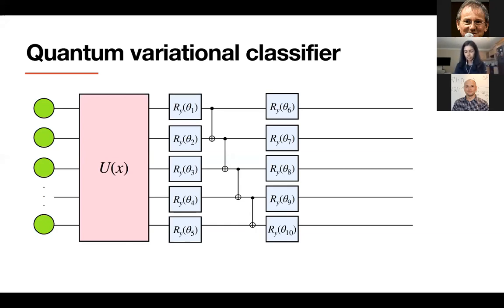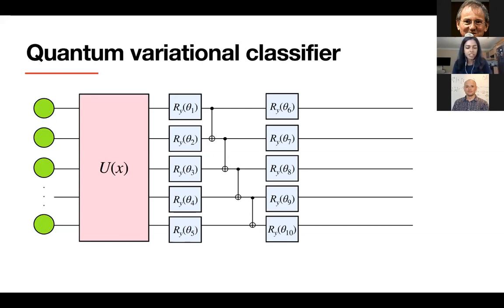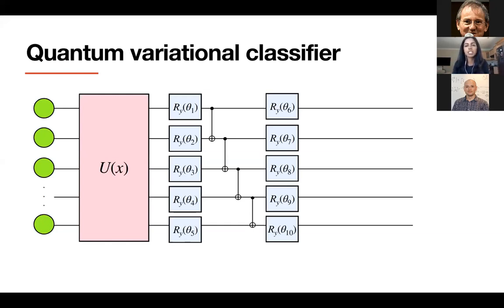Q&A: Can adding more depth to a quantum variational classifier lead to overfitting? That's a beautiful and still unanswered question. We can't get to the over-parameterized space empirically because our hardware is limited. But in my own research I think yes, we will definitely experience overfitting by adding more parameters, because even at low depths quantum circuits can express very complicated functions. High complexity is not necessarily good for capacity control in classical machine learning, where you're trying to balance overfitting and underfitting.